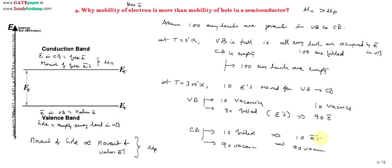If you treat vacancies as jobs and electrons as job seekers: in the valence band, job seekers (90 electrons) are more but jobs (10 vacancies) are less, so the probability of movement is very small. In the conduction band, jobs (90 vacancies) are more and persons (10 electrons) are less, so everybody gets a job and movement is more. Because of this, electron mobility is greater than hole mobility. In conduction band there are only free electrons with less traffic, while in valence band there are valence electrons along with few holes causing more traffic — so mobility is more in the conduction band than the valence band.